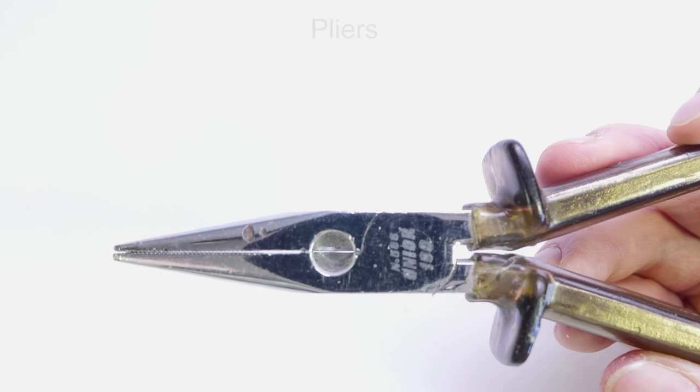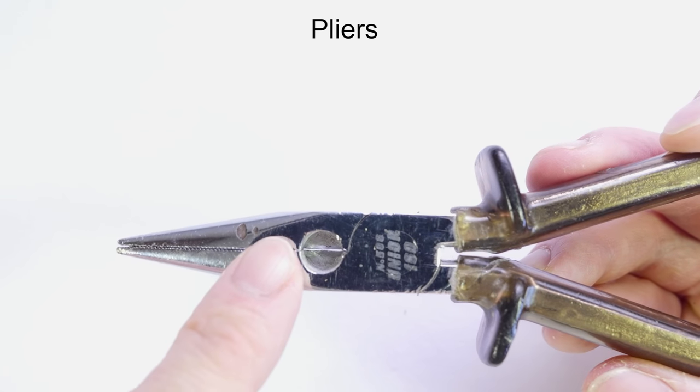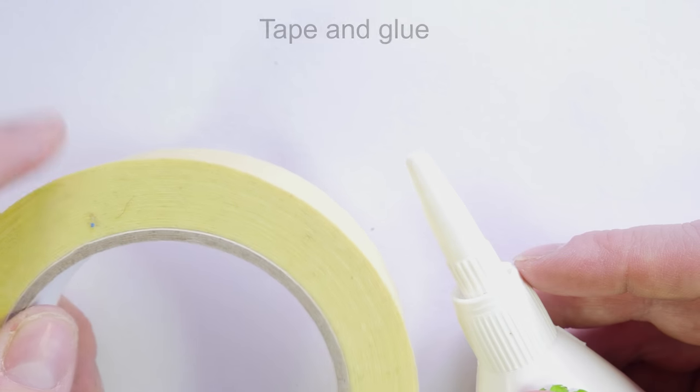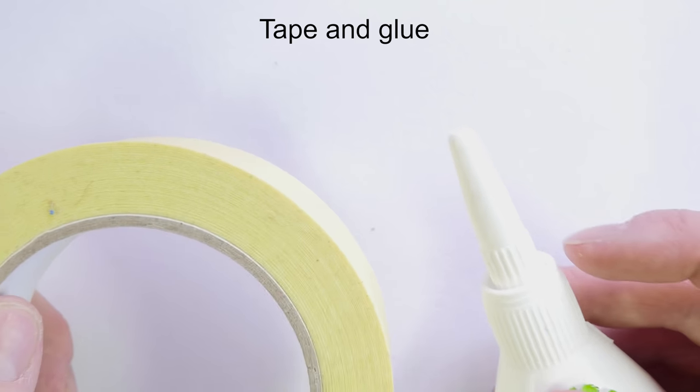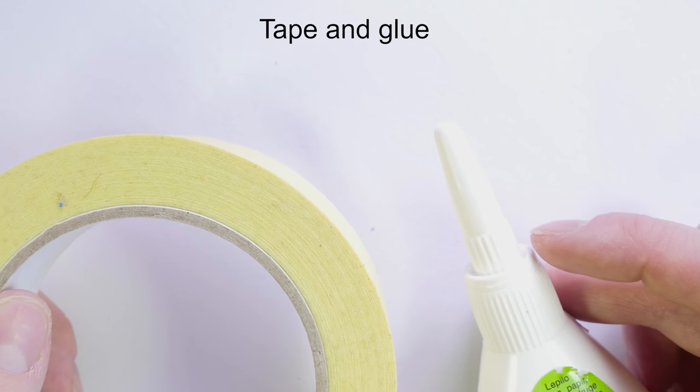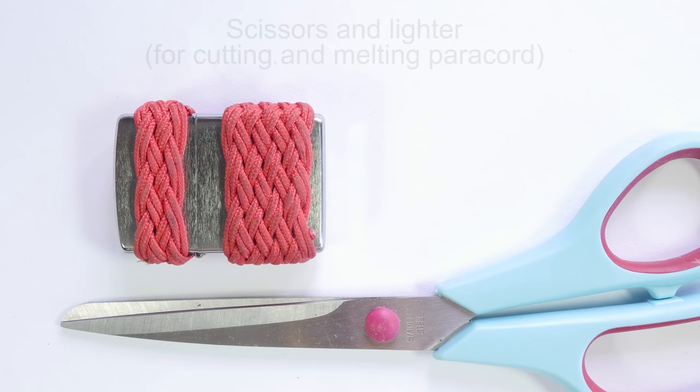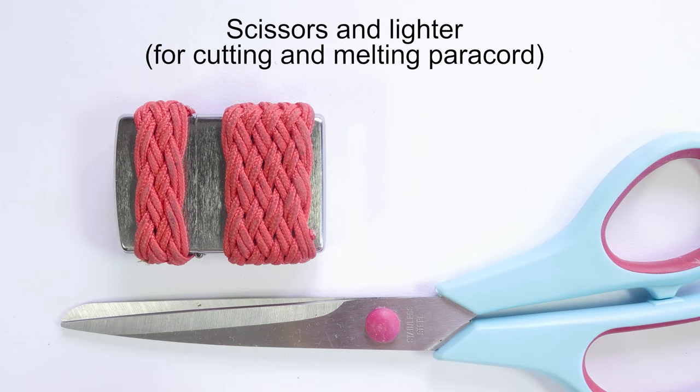A pair of pliers are going to come in very handy for this project. Some tape and glue are going to be needed to hold various parts of the bolo tie together. Finally, scissors and a lighter are a classic for working with paracord. With these supplies ready, let's begin making our bolo tie.